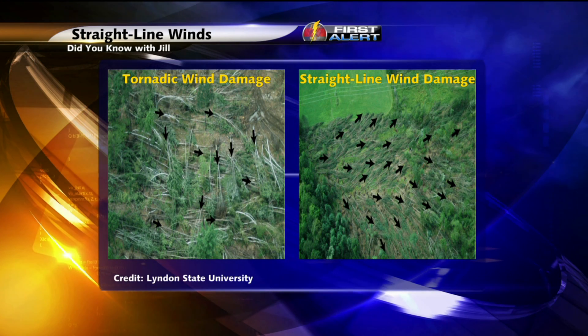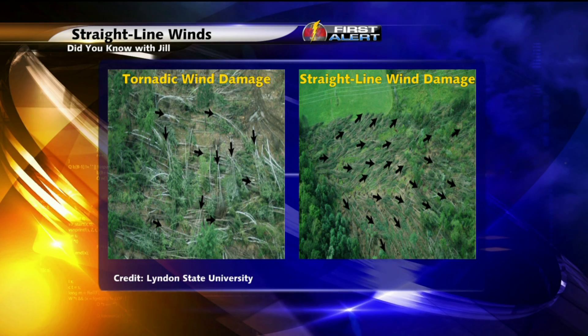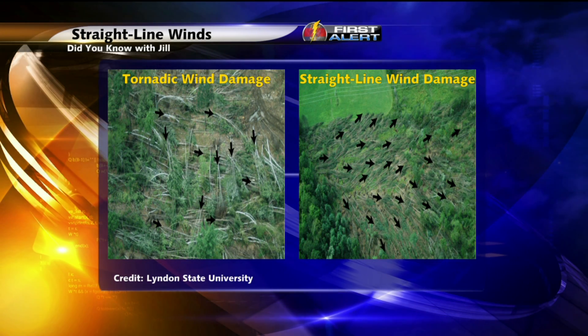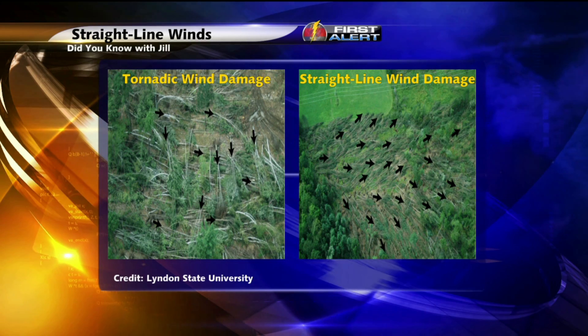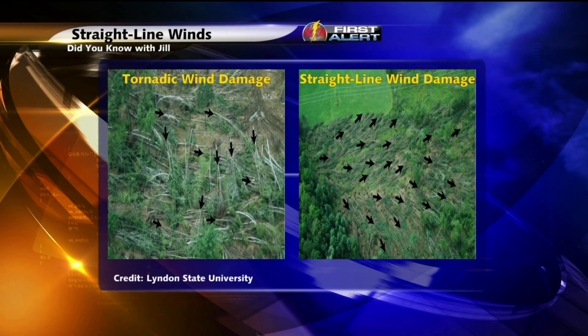So for straight line wind damage, you can think of 'pushed over.' Meanwhile, for tornadic wind damage, think of 'scattered or rotated.' For Five News, I'm meteorologist Jill Swede.